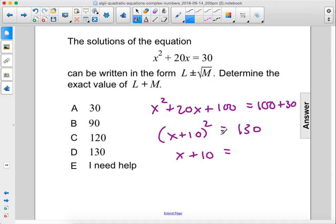x plus 10 equals plus or minus the square root of 130. x equals negative 10 plus or minus the square root of 130.